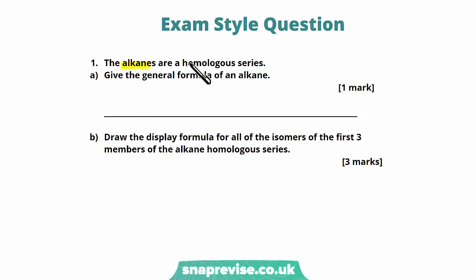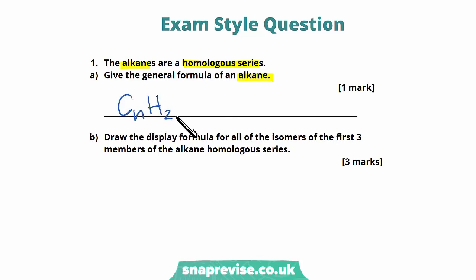The alkanes are a homologous series and one we should be very familiar with. Give the general formula of an alkane. This is a question you will have come across time and time again, and it's something you should know off the top of your head. The general formula of our alkanes is CnH2n+2, getting us that quick and easy mark.